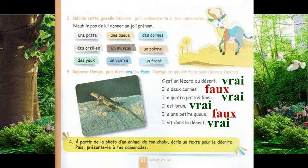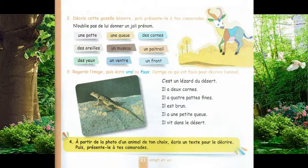Je corrige ce qui est faux pour décrire l'animal. Il a deux cornes : faux. Il n'a pas de cornes. Il a une petite queue : faux. Il a une longue queue.